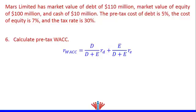Consequently, pre-tax WACC is the market value of net debt divided by both the market value of net debt plus the market value of equity — which is the weight of net debt — multiplied by the cost of debt, plus the market value of equity divided by both the market value of net debt plus the market value of equity — which is the weight of equity — multiplied by the cost of equity.